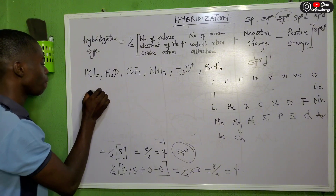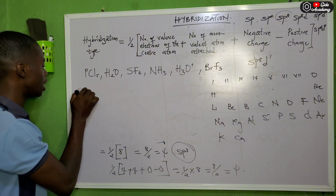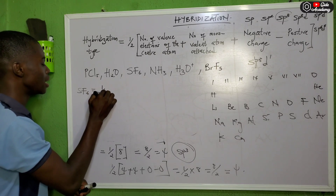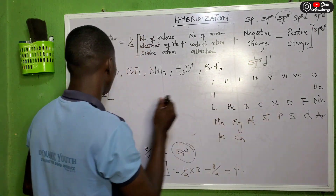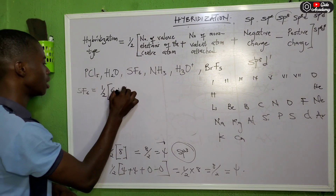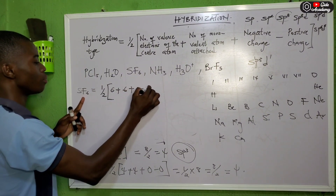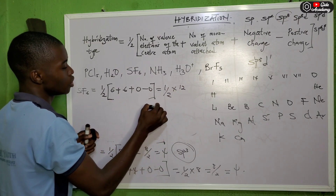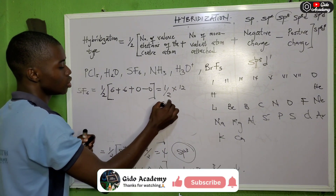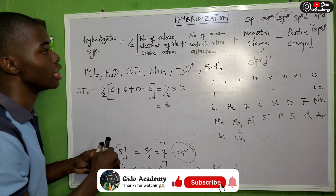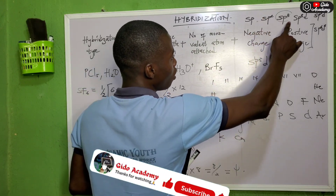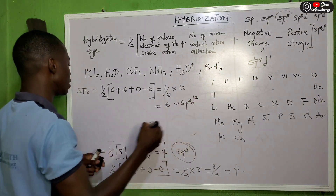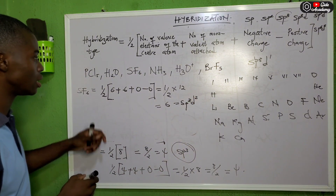For SF6, sulfur is the center atom. Sulfur is in group 6, so it has 6 valence electrons. Six fluorine atoms are attached. No charge. H = ½ × (6 + 6) = ½ × 12 = 6. Counting up to sp3d2 gives 1+3+2 = 6 orbitals. So SF6 is sp3d2 hybridized.